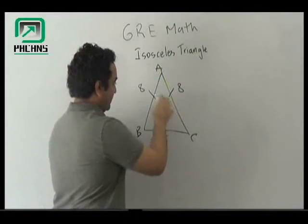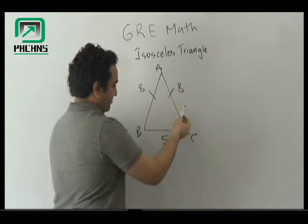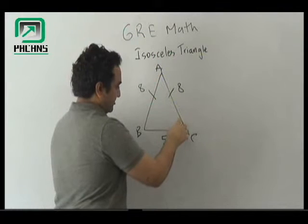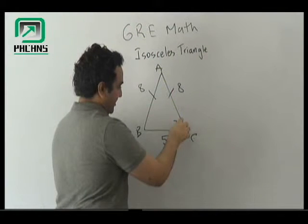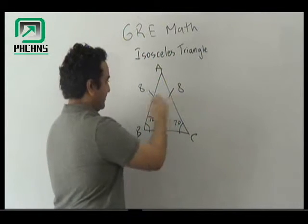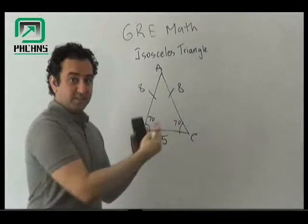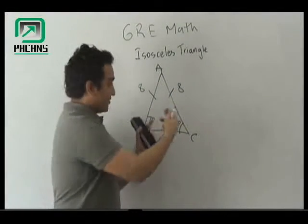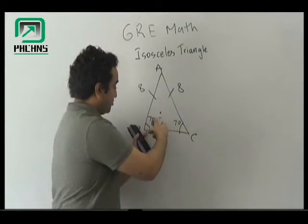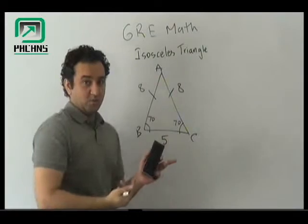The angles opposite to those equal sides will also be equal. So for instance, if this angle is 70, this would also be 70. So if two sides are equal, the angles which are opposite to those sides will also be equal.